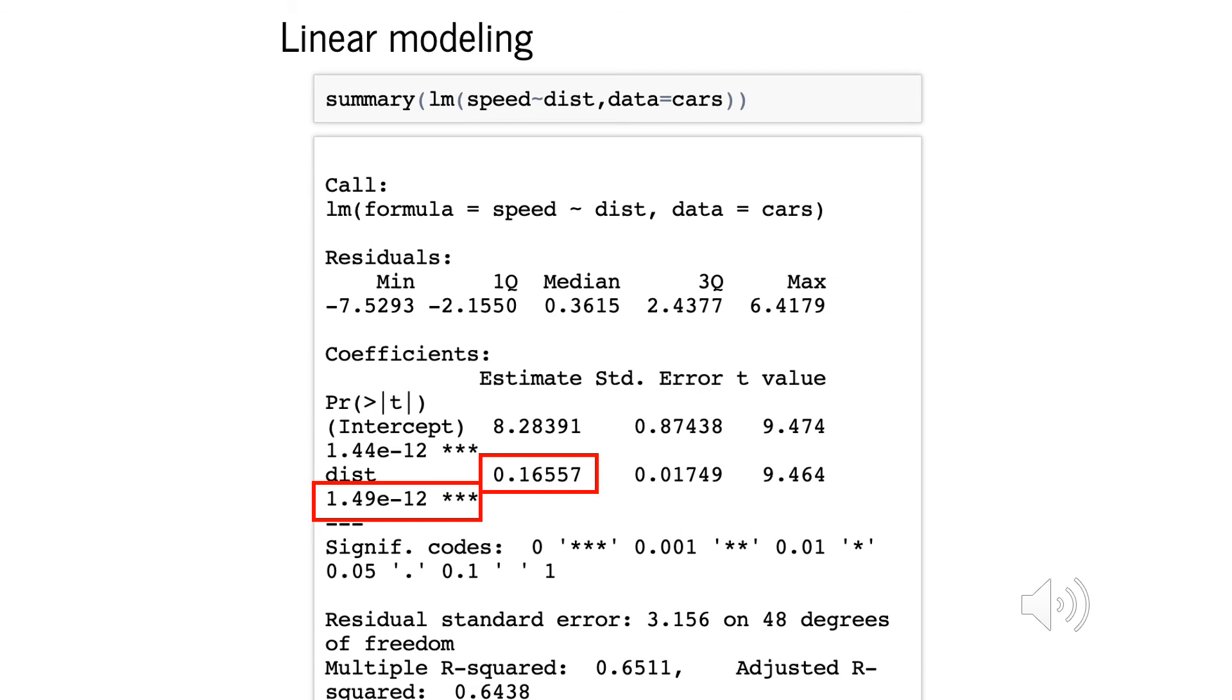To run a linear model in R, we use the function lm. In this example, we're relating the variables speed and distance from the cars data frame. A summary of this model tells us, among other things, that the slope of the line relating those two variables is approximately 0.16, and the p-value is very small, meaning there is a statistically significant relationship between these two variables.